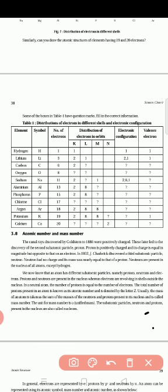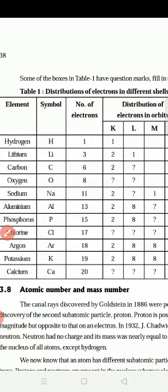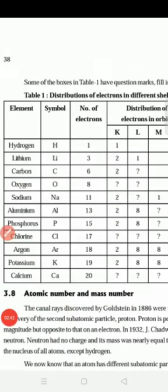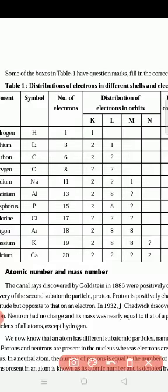The first one is hydrogen. Number of electrons — how many? One. So the distribution of electrons in orbits: in the K shell how many will be there? So I'll tell you now how to do it. For example, hydrogen.